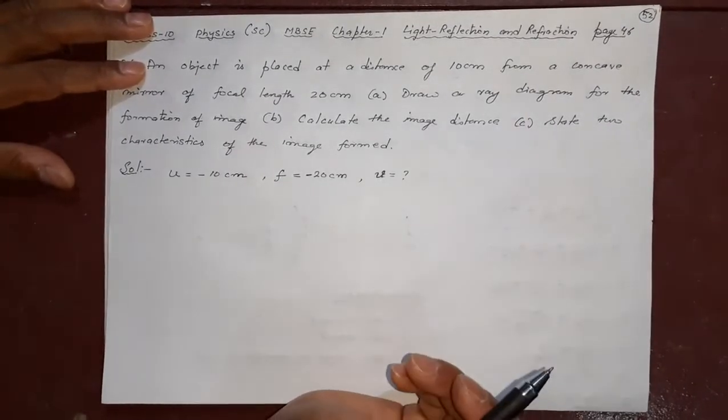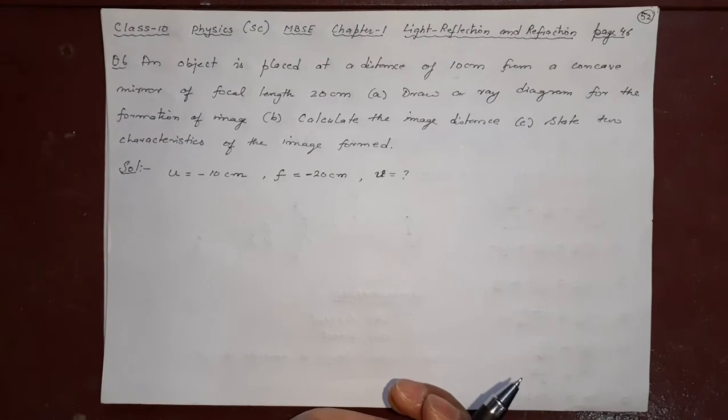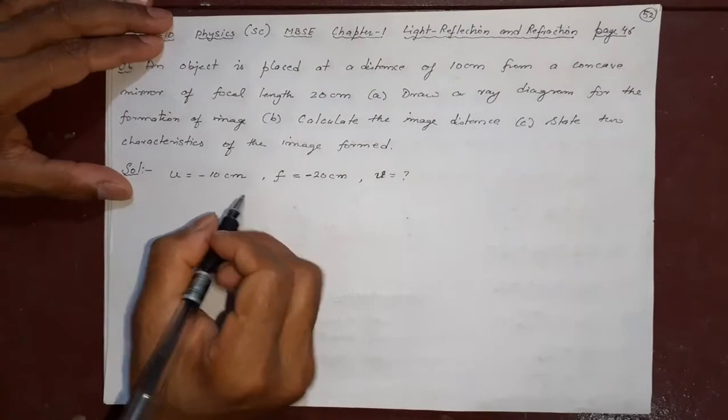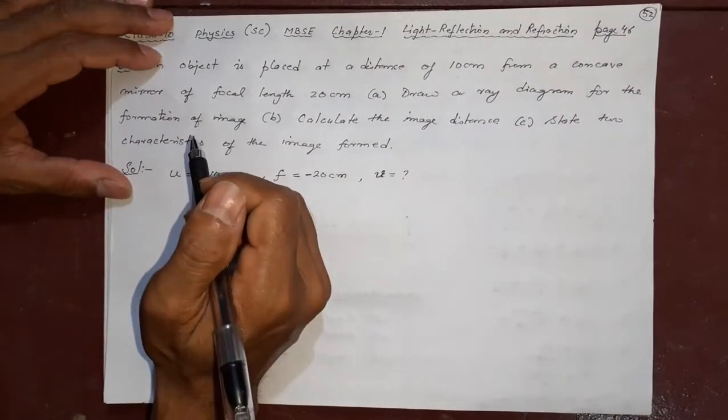State two characteristics of the image. After finding the image, you will write what type of image you are getting. What is the character of the image? Let us see. It is a mirror. So, the formula will be a mirror.